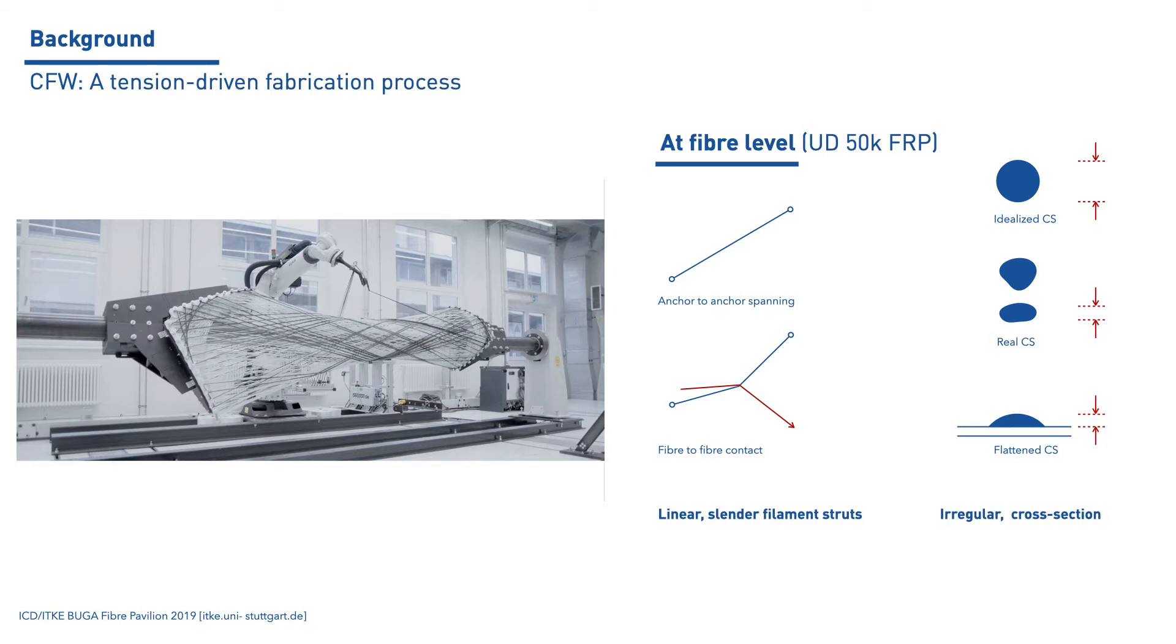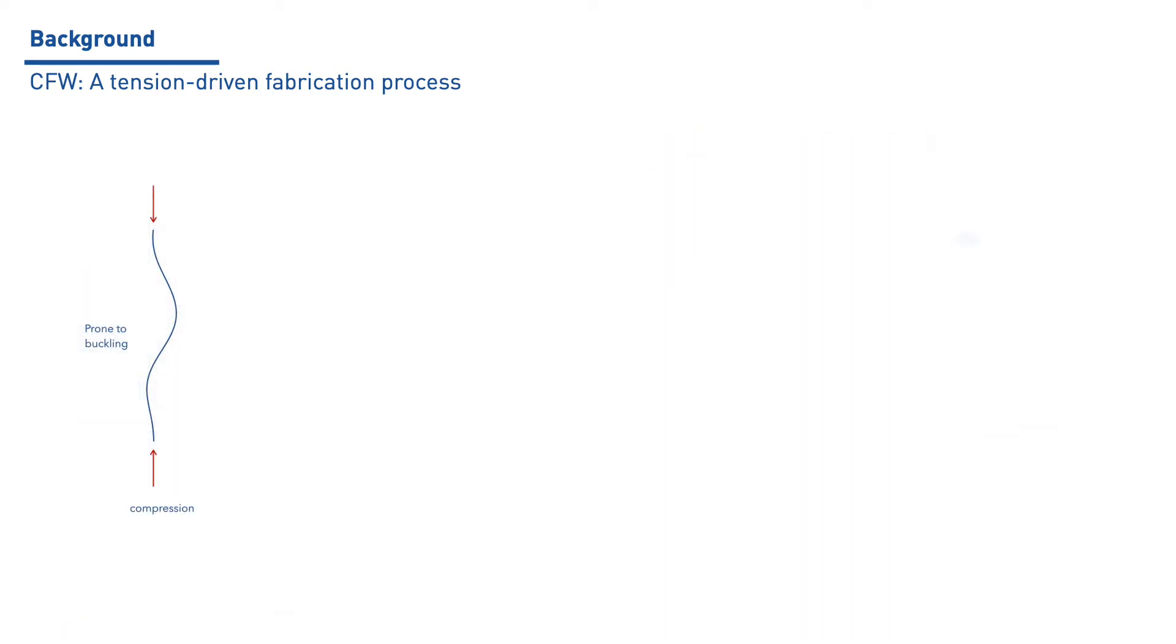Additionally, the pulling and handling of the UD fibers result in irregular strut cross-section that is further flattened when in contact with anchor points or other fibers. This combination of slenderness and irregular cross-section make the struts prone to buckle under axial compression.